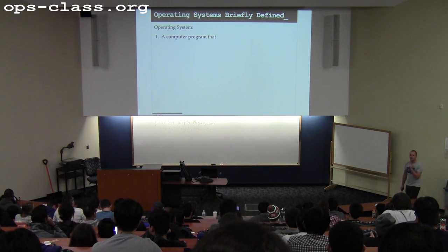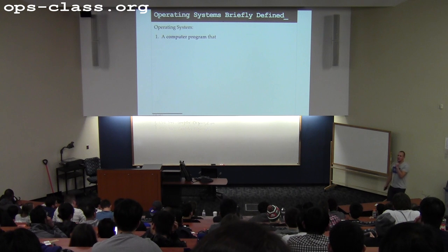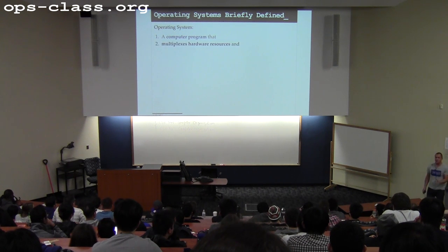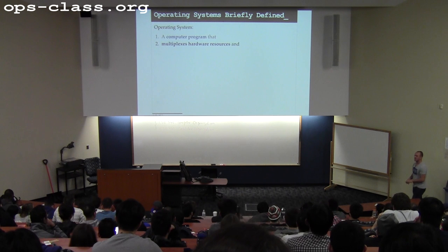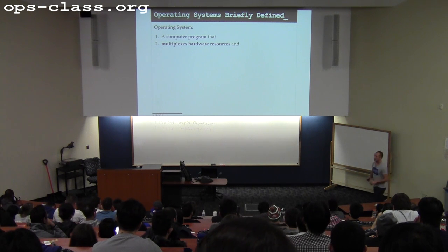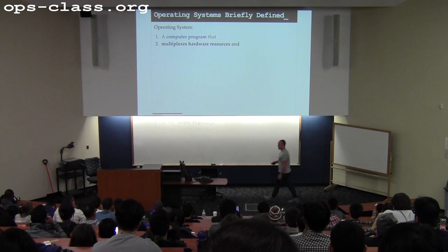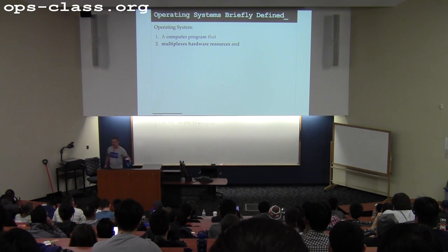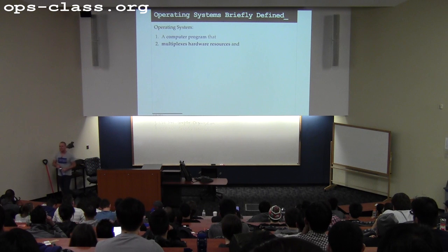You're going to be writing computer code this semester that compiles down to a binary consisting of instructions executed by a processor. It has a couple of key responsibilities that have a lot to do with how well an individual machine performs. One of the things it's in charge of is multiplexing hardware resources. Does anyone want to take a guess at what that means?